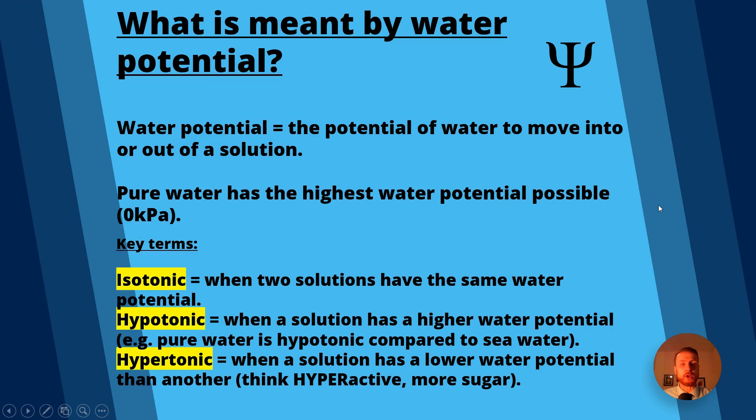Previously in the osmosis video we looked at water potential, but a brief recap is that it's the potential of water to move into or out of a solution. Pure water has the highest water potential possible, zero kilopascals. Anything with a lower water potential will be negative. An isotonic solution has the same water potential as another solution.